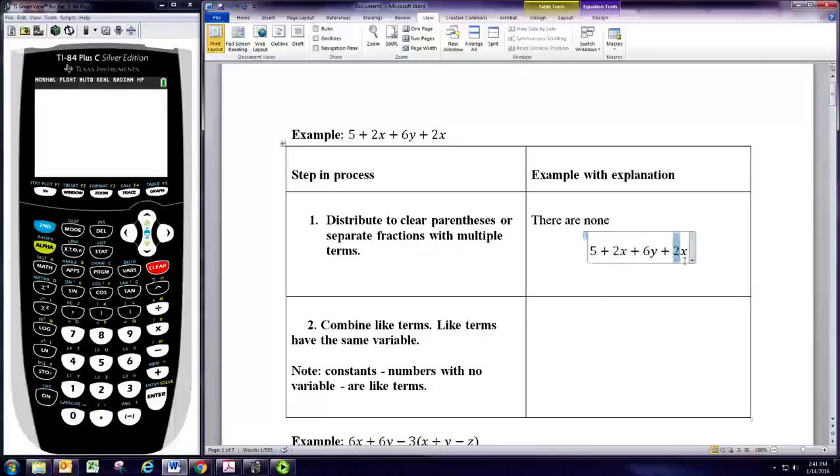And the 2x and the other 2x, since those have the same variable x, are like terms. And we can add those by just adding the numbers in front, the coefficients.